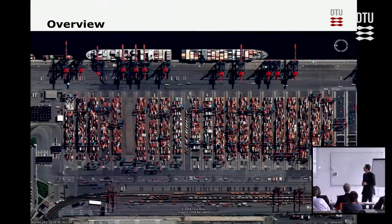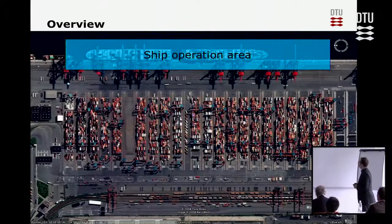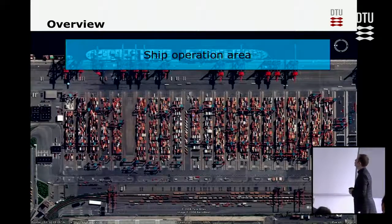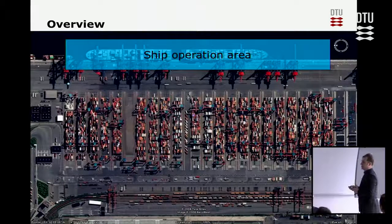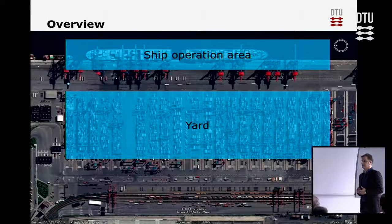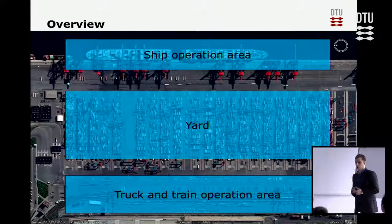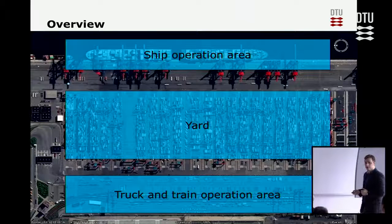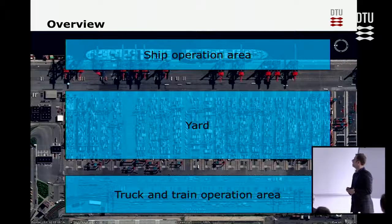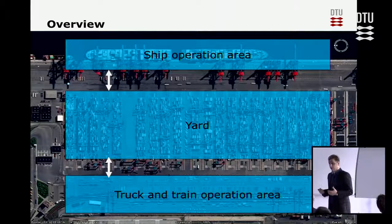Starting with an overview of a container terminal: ships come in, berth to be loaded and unloaded — the containers. This is the ship operations area, also called the seaside operations area. Then there is a yard where containers are stacked for inbound and outbound containers, and also for transshipment. There is also a truck and train operations area where trucks arrive and containers are handled. There is a continuous flow between those components — both product flow, material flow, container flow, and information flow.